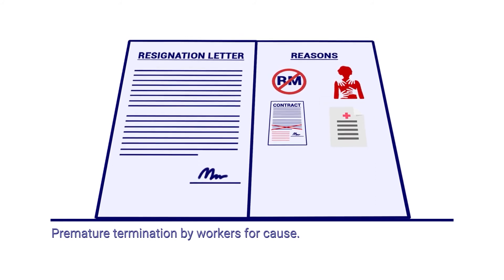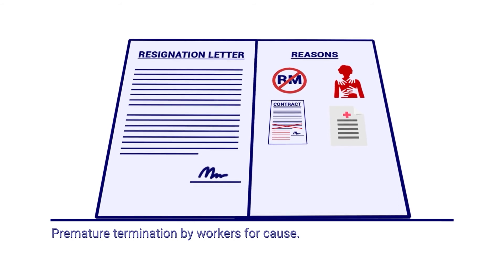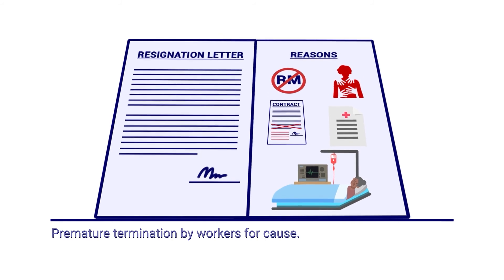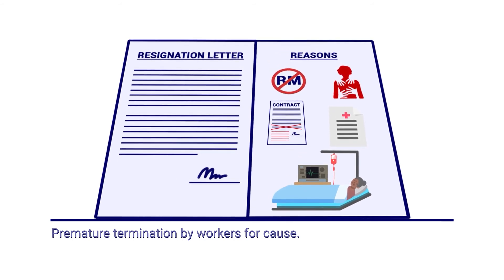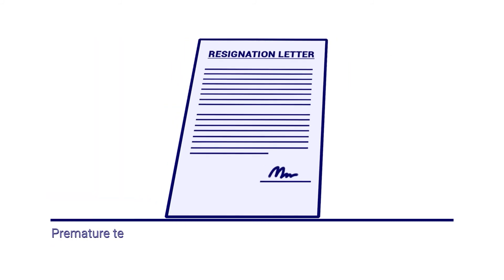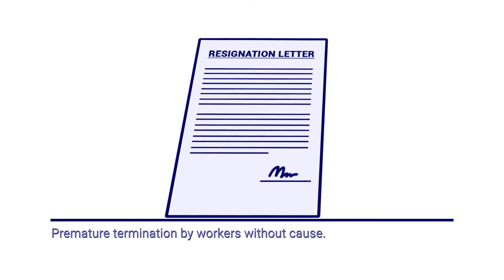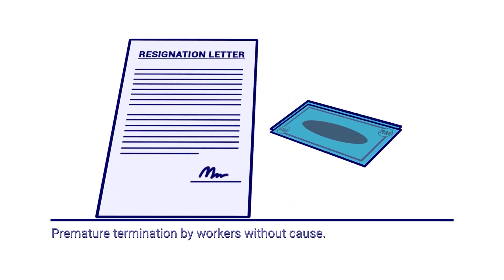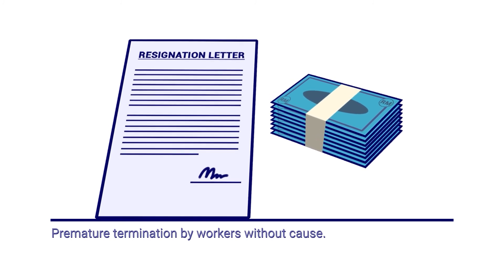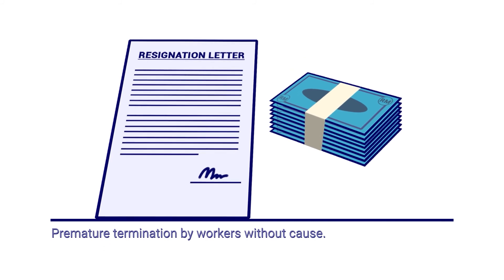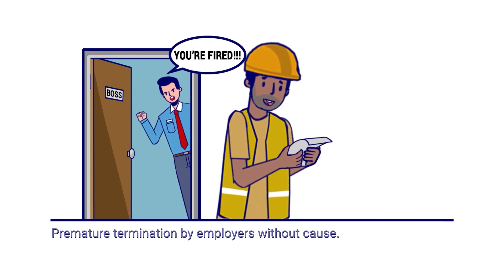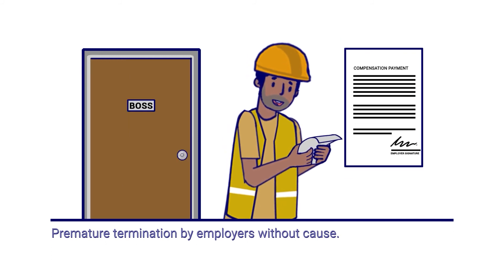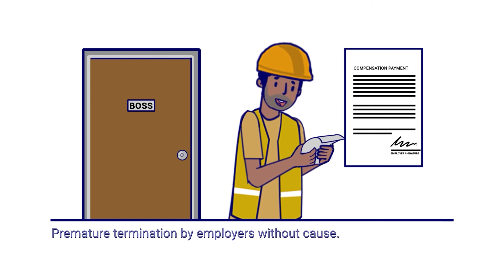Termination may also occur due to serious ill health as certified by an independent doctor, or extenuating circumstances such as the death or serious illness of a family member or other family emergency with satisfactory proof provided to employers. If migrant workers voluntarily terminate the contract prematurely without providing reasonable notice and without the fault of employers, workers are to pay the employer the notice period and/or other compensation as stipulated in the contract. If employers prematurely terminate the contract without cause, employers must pay for the notice period and any applicable termination benefits or compensation in accordance with terms and conditions of employment.